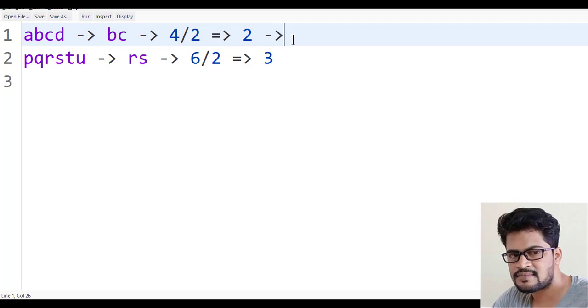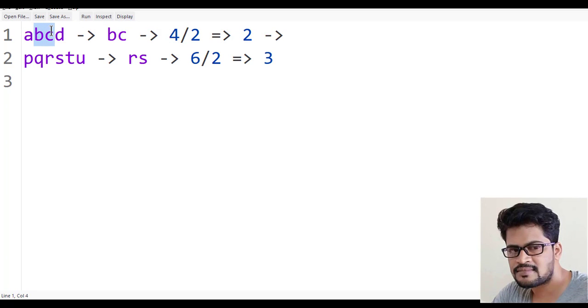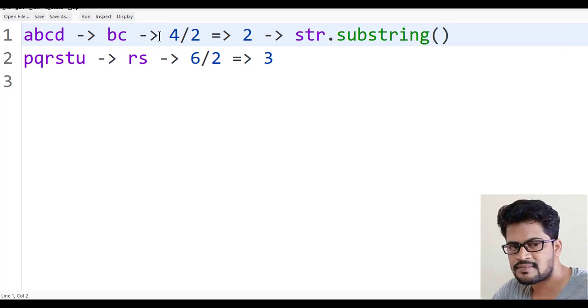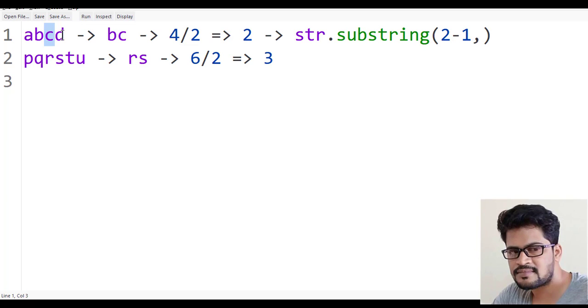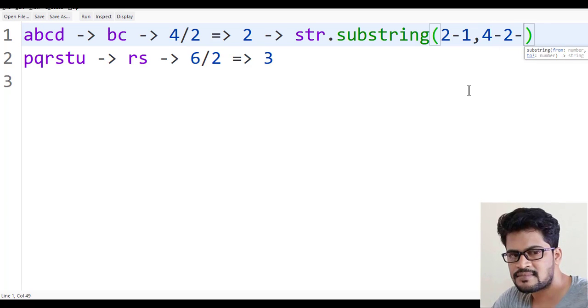So now how do you get this? This is 2 and this is 3, right? So I want to get only these two. You can write str.substring of, I want to start from index 1. So that's 2 minus 1. What about this one? The length is 4, so 4 minus 2 minus 1.